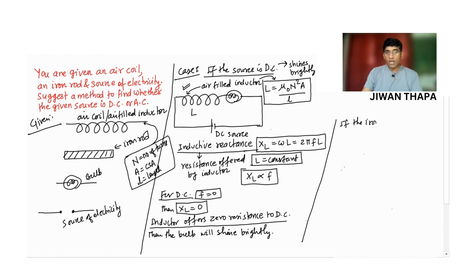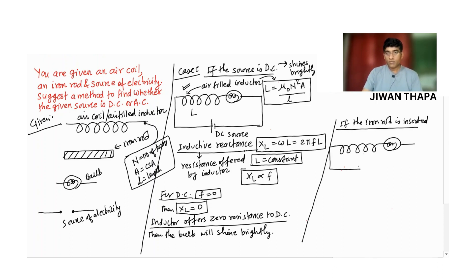Now, if the iron rod is inserted — let us say we have a DC source and we take the iron rod and place it between the circular turns of the inductor — this is the iron rod between the circular turns.